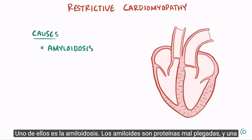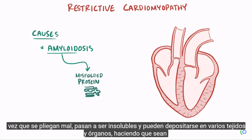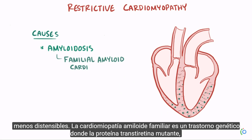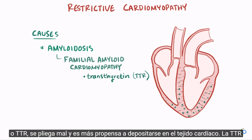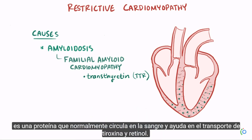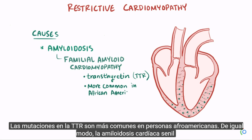One of these is amyloidosis. Amyloids are proteins that have been misfolded, and once misfolded they become insoluble and can deposit in various tissues and organs, making them less compliant. Familial amyloid cardiomyopathy is a genetic disorder where mutant transthyretin protein, or TTR, deposits in the heart tissue. TTR is a protein that usually circulates in the blood and helps transport thyroxine and retinol, and mutations in TTR are more common in African-Americans.